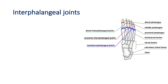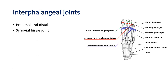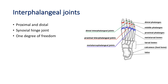Coming to the interphalangeal joints — there is not much to discuss. There are proximal and distal interphalangeal joints, which are synovial hinge-type joints with one degree of freedom: flexion 0 to 50 degrees and extension 50 to 0 degrees.